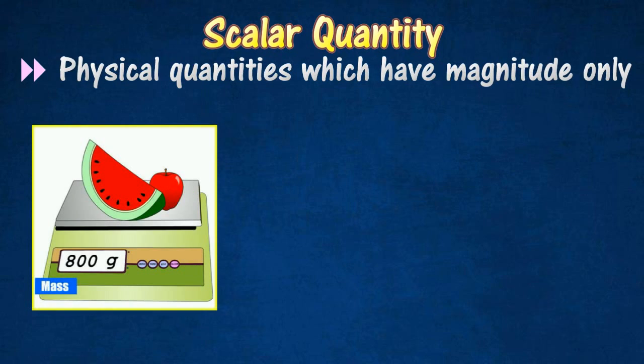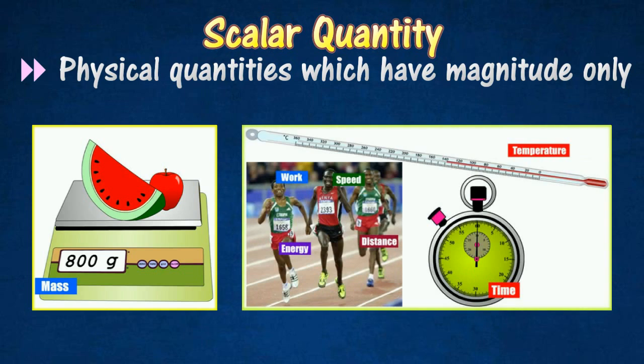An example of scalar quantity is mass, as mass is completely described once its magnitude is known. Other examples of scalar quantities include distance, speed, volume, temperature, and time. Scalar quantities are added just as any two numbers are added.